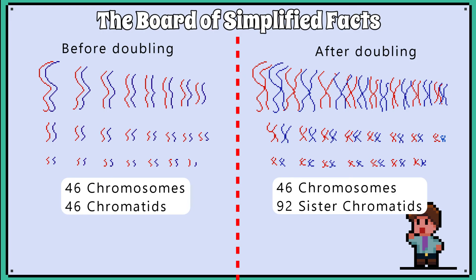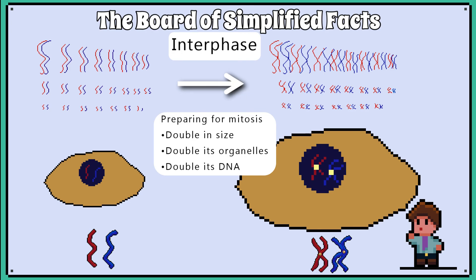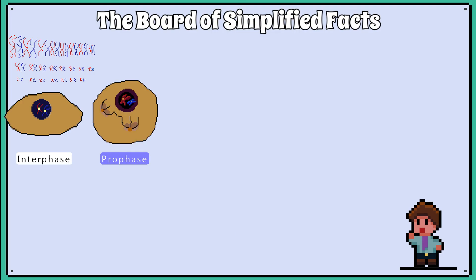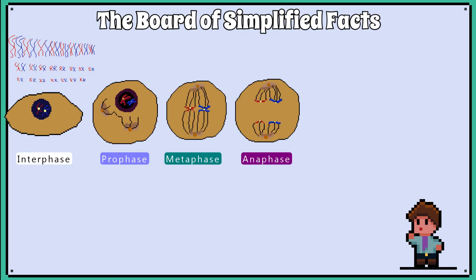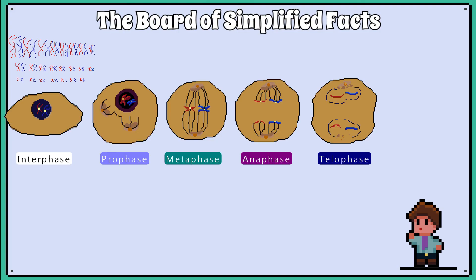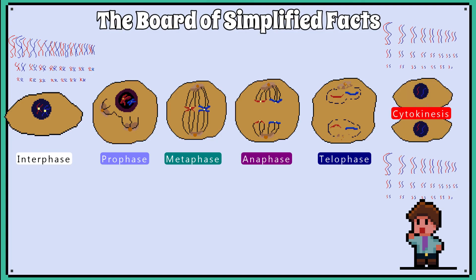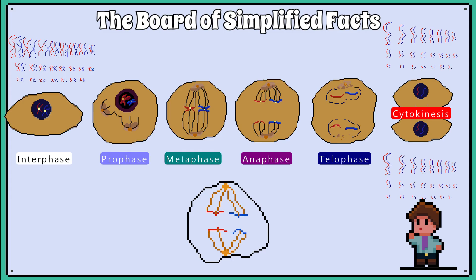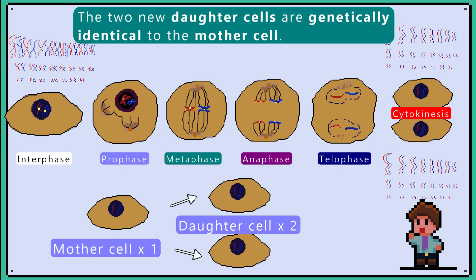This doubling happens in what we call the interphase stage. What follows next is prophase, metaphase, anaphase, telophase, and finally cytokinesis. These terms are used to describe each stage as the sister chromatids are pulled apart and separated from each other and the cell splits into two. What you end up with is two daughter cells that now have 46 chromosomes made up of 46 chromatids, which are genetically identical to the mother cell.